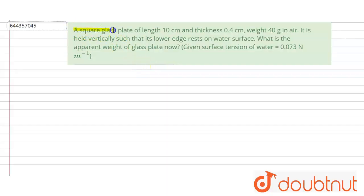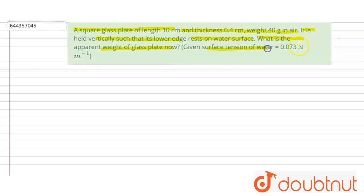The question is: a square glass plate of length 10 centimeters and thickness 0.4 centimeters weighs 40 grams in air. It is held vertically such that its lower edge rests on the water surface. What is the apparent weight of the glass plate? Given: surface tension of water is 0.073 newton per meter. First, we make the figure.